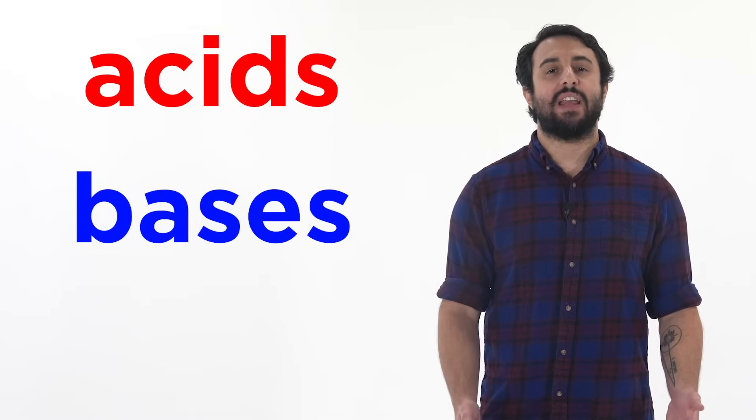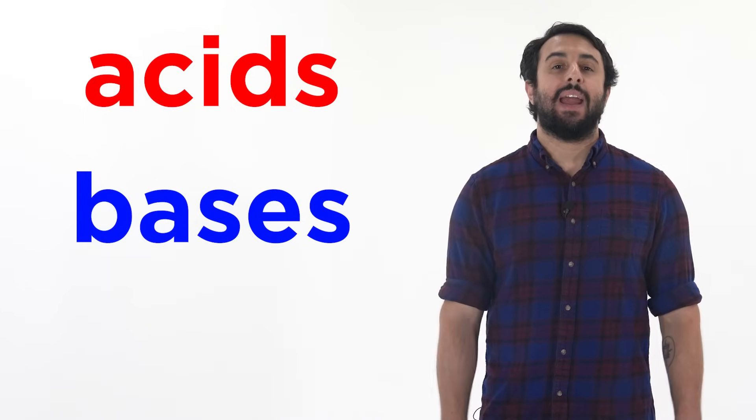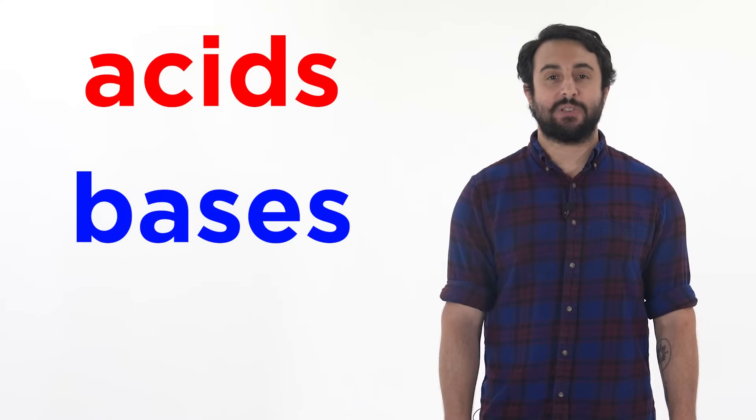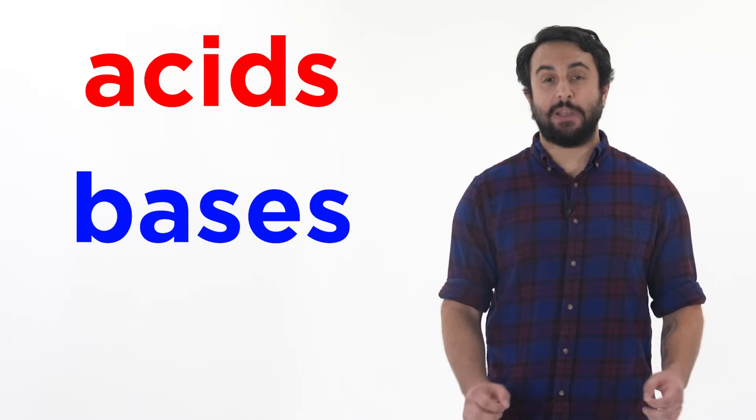We should now understand how acids and bases are defined under the Bronsted-Lowry model, and if given two species that participate in an acid-base reaction, how to draw the products, which are the conjugate species.